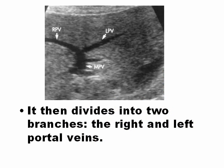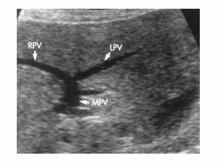On ultrasound, you can see the main portal vein dividing into the right portal vein and left portal vein. You can see an echogenic structure because they are filled with blood — the right portal vein goes to the right lobe and the left portal vein goes to the left lobe.